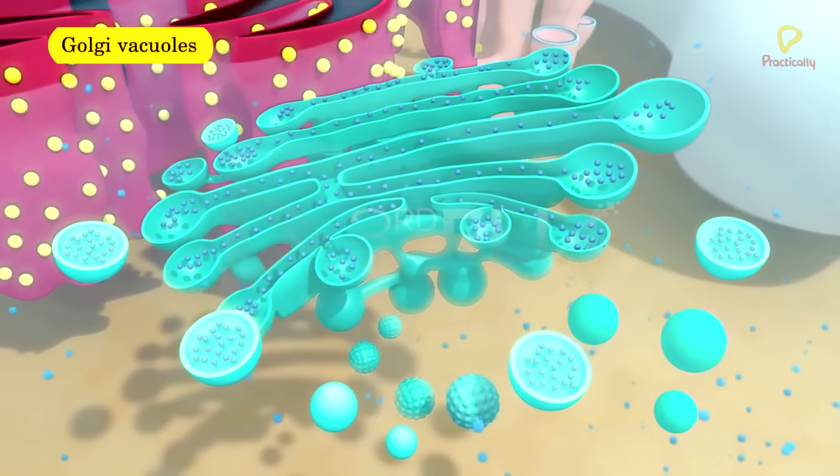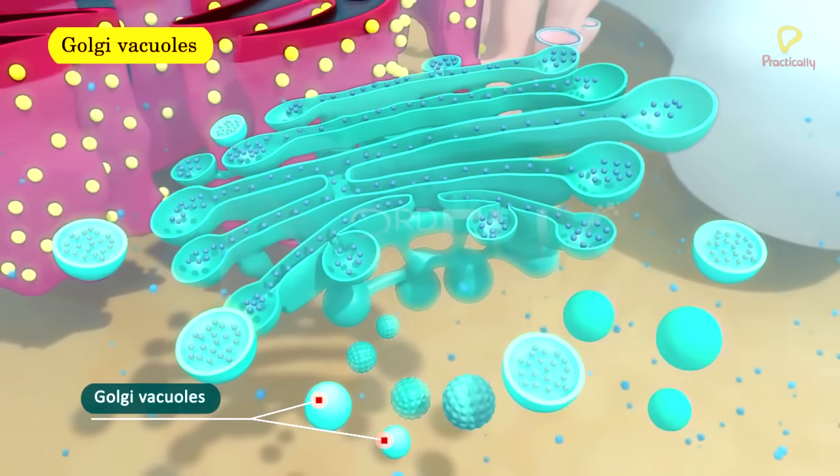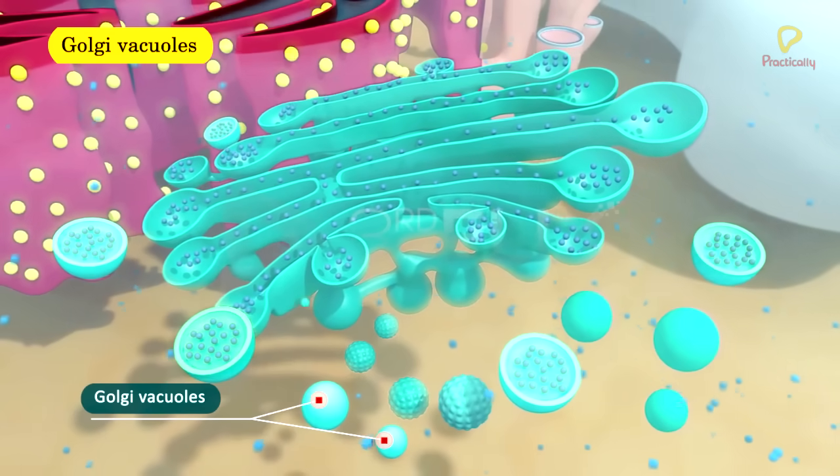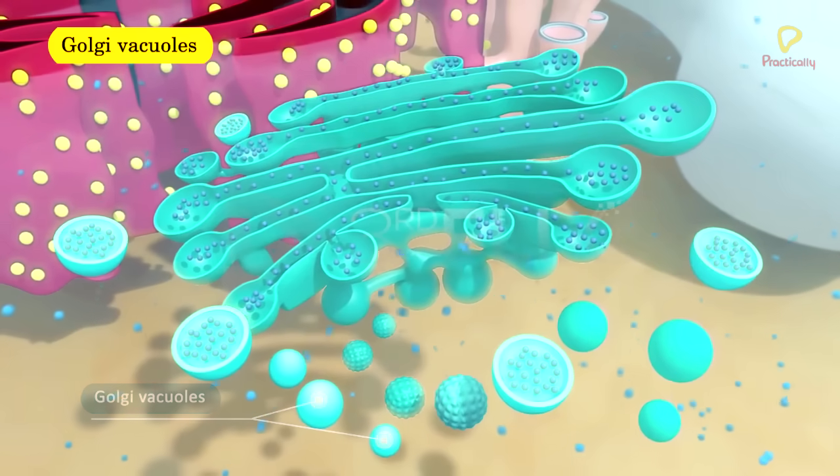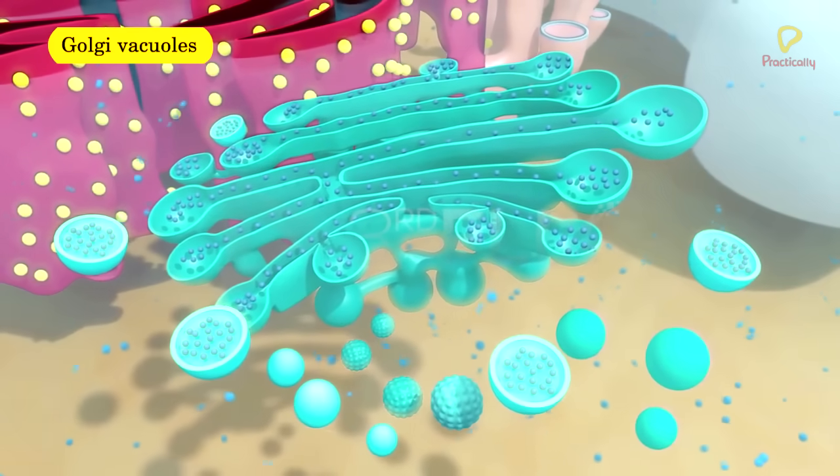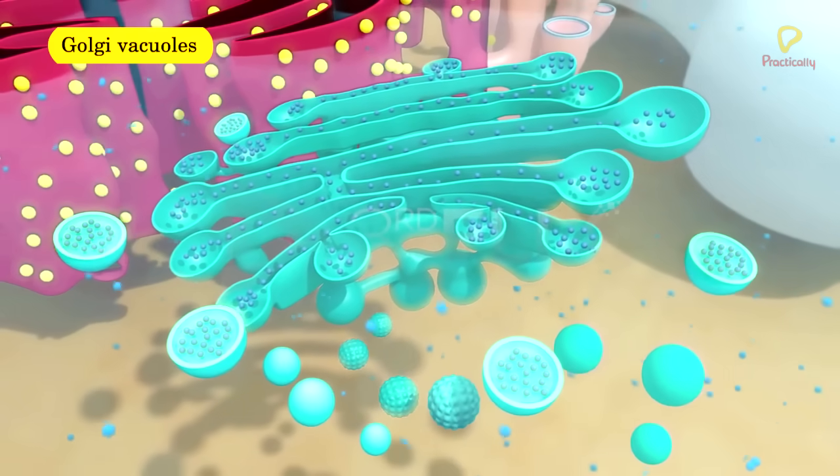Golgi vacuoles are large, rounded sacs. They are produced by the concave surface of Golgi apparatus. Some of the Golgi vacuoles function as lysosomes. They are filled with granular substances.